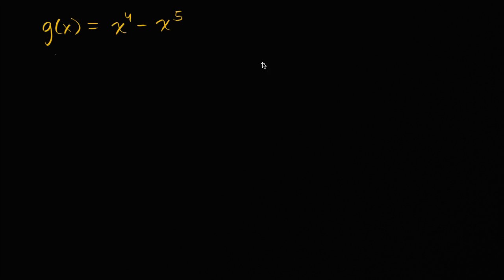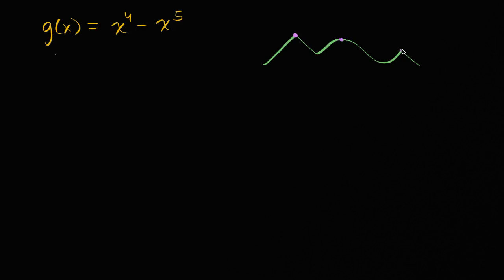Just to remind us what's going on at a relative maximum — let me draw a hypothetical function. A relative maximum is going to happen at the top of a mountain or top of a hill. These all look like relative maxima. What's in common? The function is going from increasing to decreasing at each of those points. Or you could say that the first derivative is going from positive to negative.